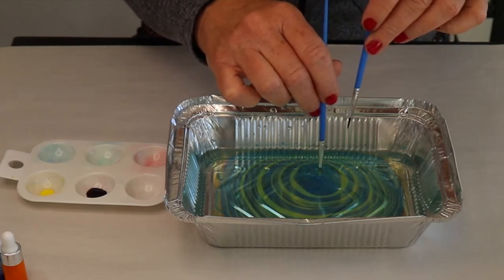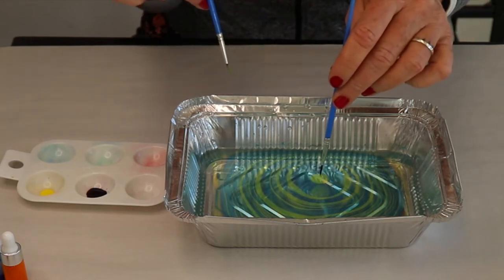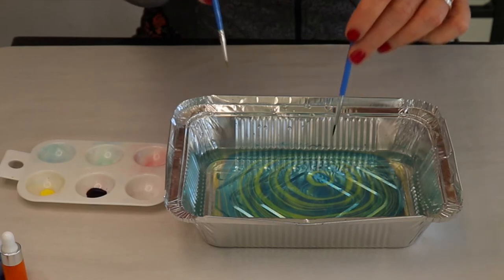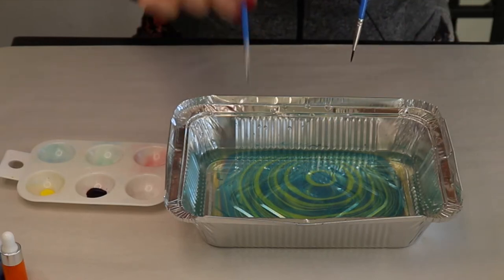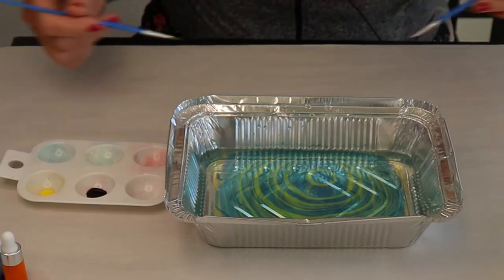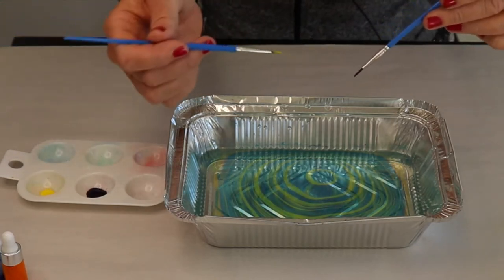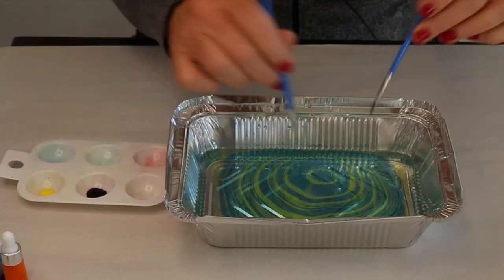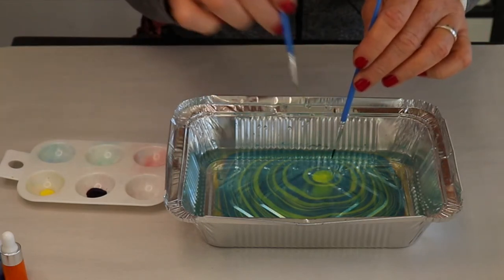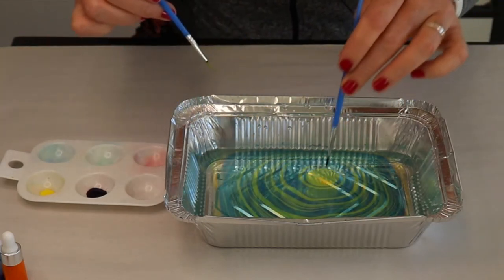I'm just going to continue. Notice that I barely touched the paint on the water. If I were to dip the brush really deep, a lot of the paint would just fall to the bottom. And if that does happen to you, it doesn't matter. It just means that you've wasted some paint, but it doesn't really matter because you're going to only print what's on top of the water.